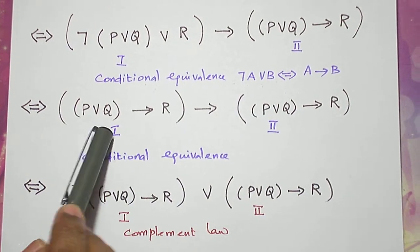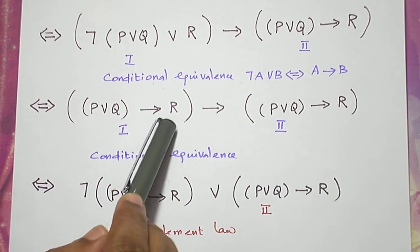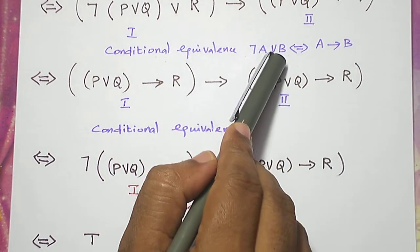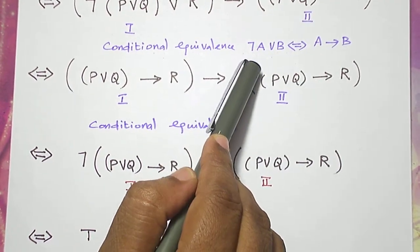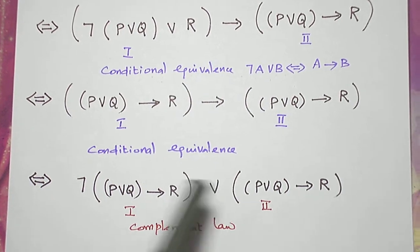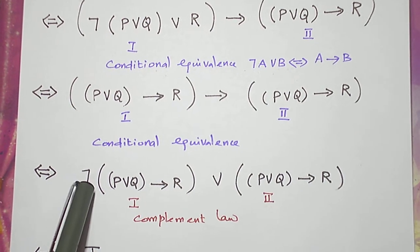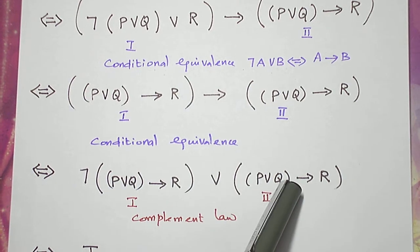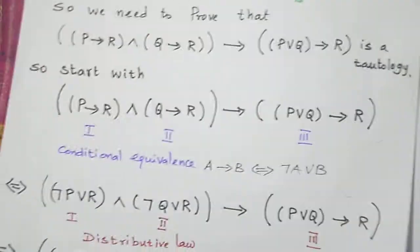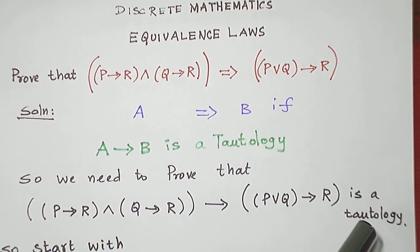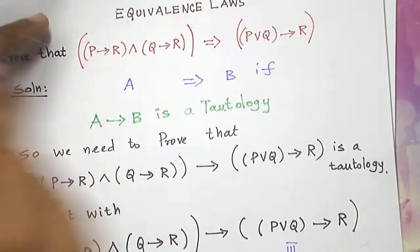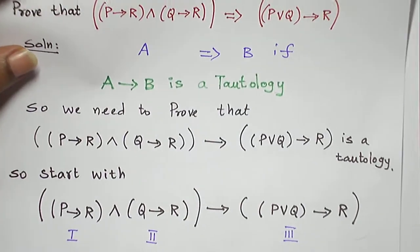Now look at this: the first statement and the second term have a conditional connective, so I apply the conditional equivalence again — A conditional B is equivalent to negation A or B. If you look at this term, both are one and the same, so this looks like negation P or P. Negation P or P is true by the complement law. So we prove what we are supposed to prove: the statement formula is a tautology, and therefore the implication is proved.